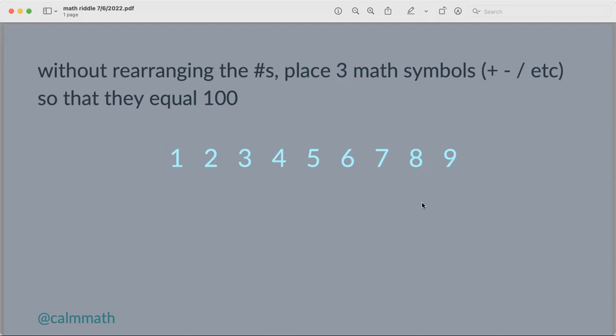So my first thought with this is, how can I group some of these together, so that it would add or subtract to 100. If I split them down the middle, 12,345 minus 6,000 does not equal 100. That's too big of a difference.